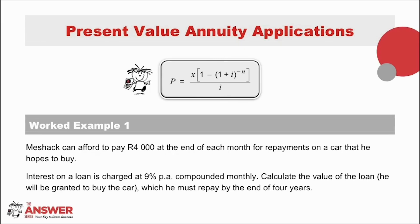Let's start by looking at a simple example. Mishak can afford to pay R4,000 at the end of each month for repayments on a car that he hopes to buy. Interest on a loan is charged at 9% per annum, compounded monthly. Calculate the value of the loan he will be granted, which he must repay by the end of four years.